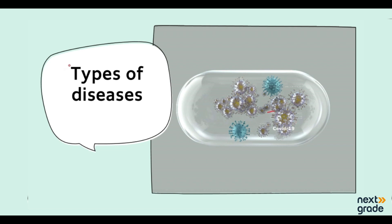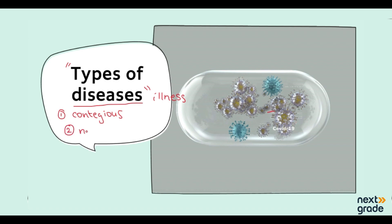Hello everyone and welcome back. In today's video we will be discussing the types of diseases. Let's have a recap — a disease is any kind of illness that affects our body. There are two types of diseases: the first one is contagious disease and the second one is non-contagious disease.